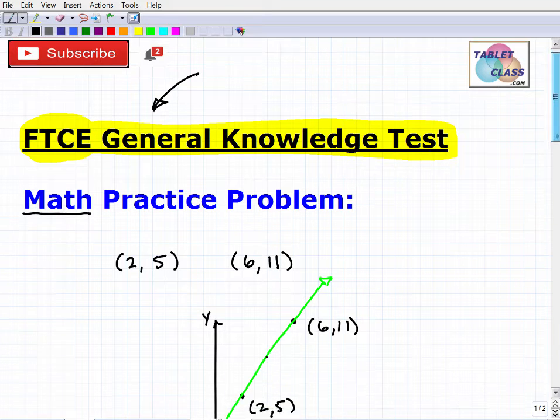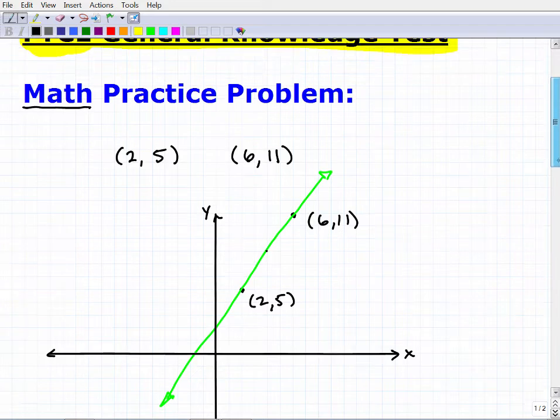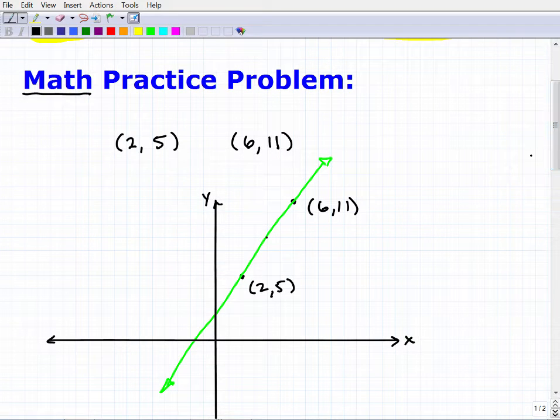But let's get into this little practice problem here. So what I want you to do is I have some information here. I have an XY plane. I have two points on this XY plane and a line that goes through those two points. So what I'd like you to do is to calculate the slope of this line. So a question would be kind of like, find the slope of a line that passes through the point (2,5) and (6,11).